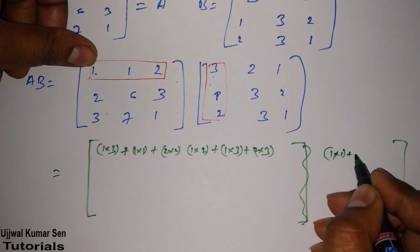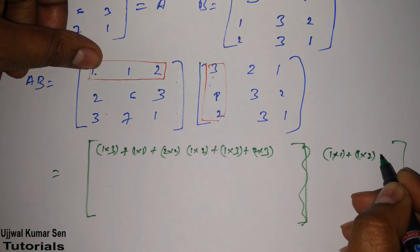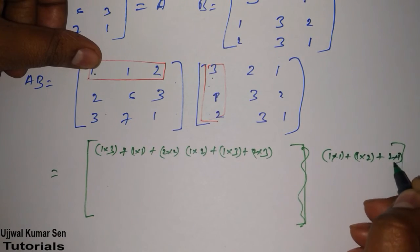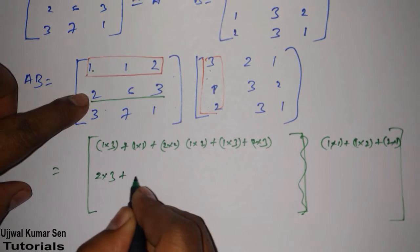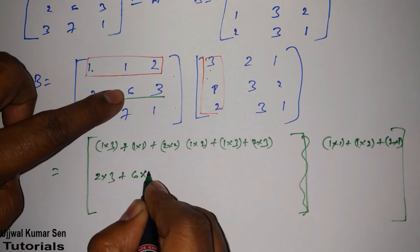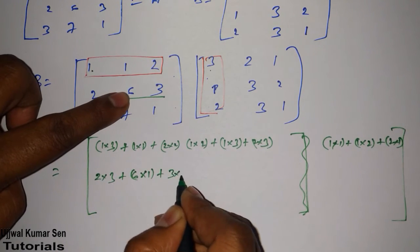Next one. 1 multiple 1 plus 1 multiple 2 plus 2 multiple 1. We will do the same process with this row also. 2 multiple 3, 6 multiple 1, and 3 multiple 2.